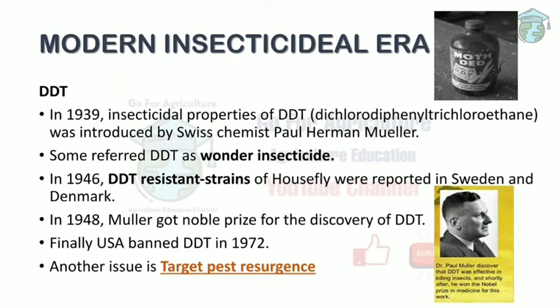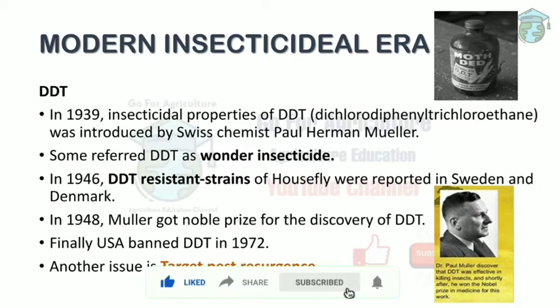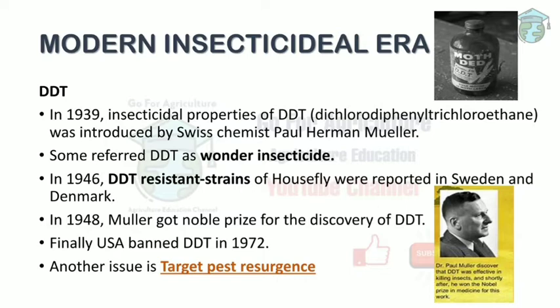The modern insecticidal era introduced DDT — dichlorodiphenyltrichloroethane — discovered in 1939 by Swiss chemist Paul Hermann Müller. From 1939 onwards, DDT was used against all kinds of pests and worked so effectively it was called a 'wonder insecticide.' However, by 1946, the housefly started showing resistance to DDT. In 1948, Müller received the Nobel Prize for its discovery, and DDT was finally banned in 1972 by the USA.